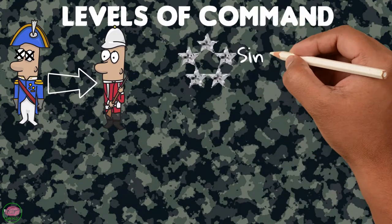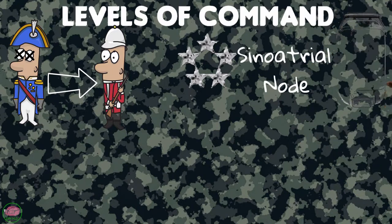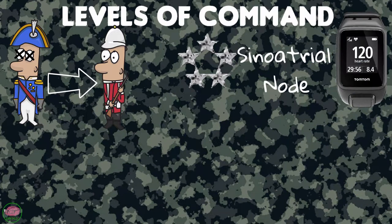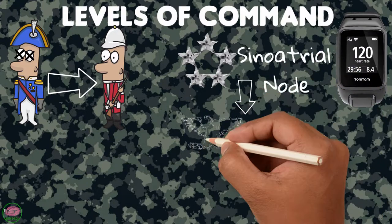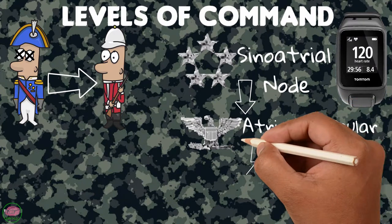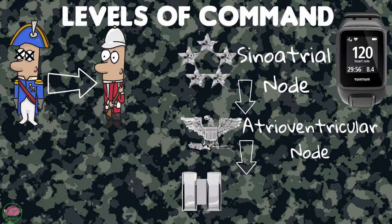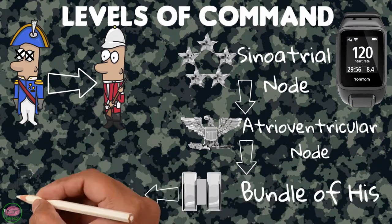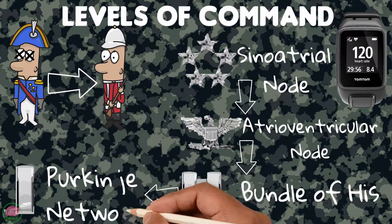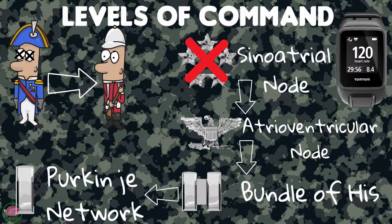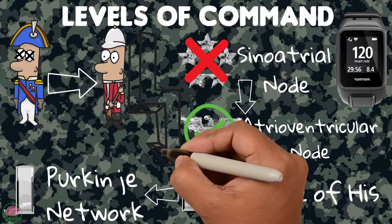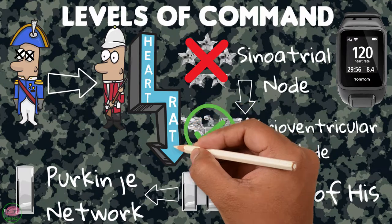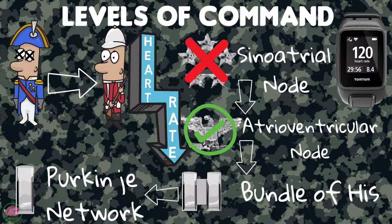The general is the sinoatrial node, also known as the pacemaker of the heart, which determines the heart rate telling everybody else how fast to beat. The next in command is the atrioventricular node, then the bundle of His, and finally the Purkinje network. If one of these structures fails, the next one in the chain takes over and becomes the pacemaker. However, as you go down the chain of command, the heart rate becomes lower and unstable.